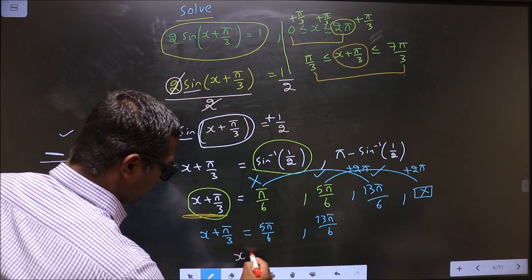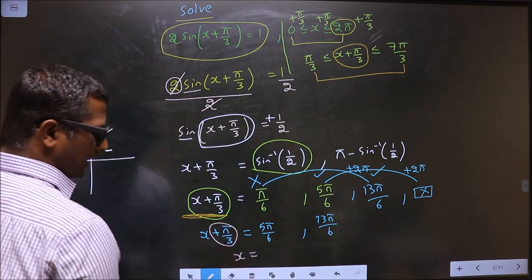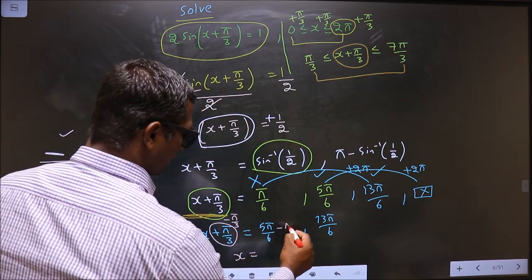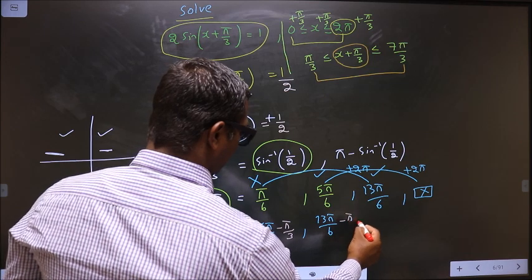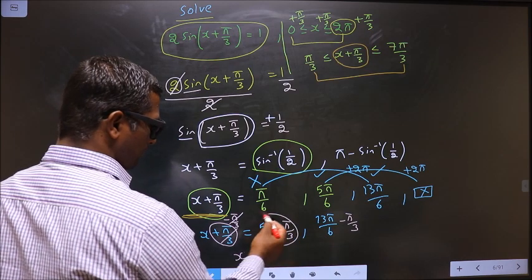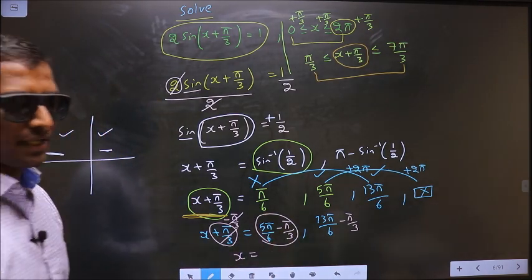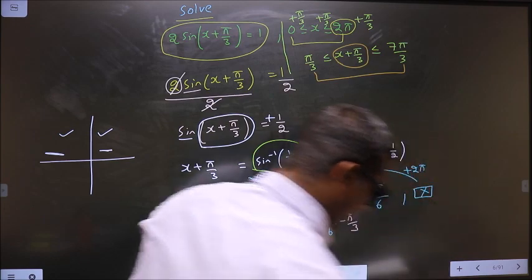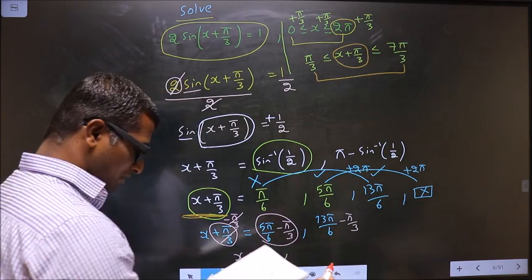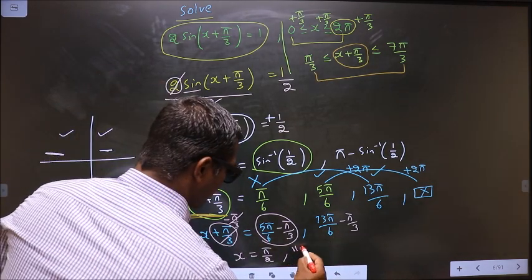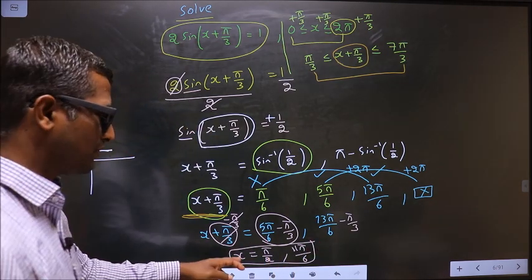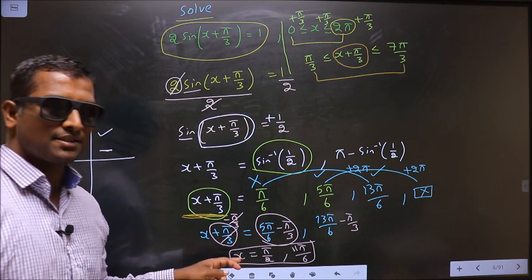Now to get the values for x, remove the + π/3 by subtracting π/3 everywhere. From 5π/6 − π/3, put this in the calculator — you should get π/2. From 13π/6 − π/3, put this in the calculator — you should get 11π/6. These are the values for x. This is our answer.